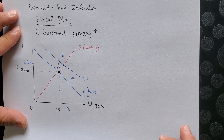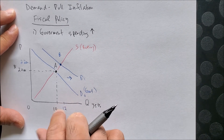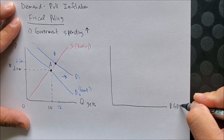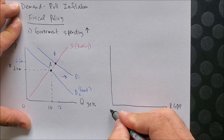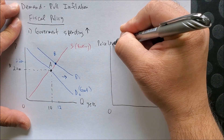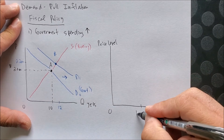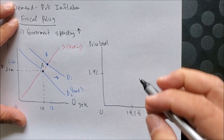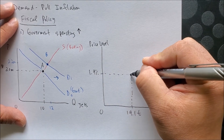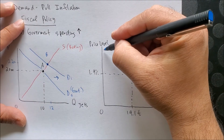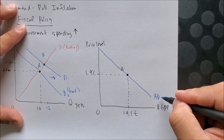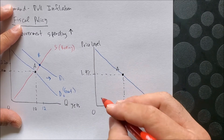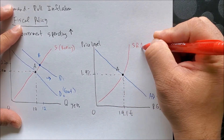Next to our government market we can draw the AD-AS model. On the x-axis we have real GDP — looking at a base year — and on the y-axis we have the price level, representing inflation. Let's use 19.1 trillion dollars on the x-axis and 1.9 percent inflation on the y-axis. We establish our equilibrium at point A, then draw the aggregate demand curve AD, which is a function of GDP with G representing government spending, and the SRAS short-run aggregate supply curve.